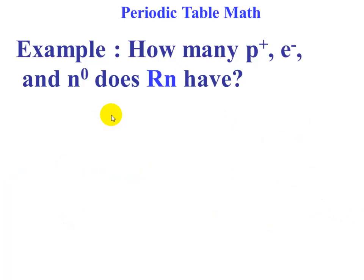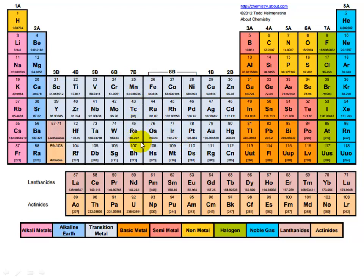We're going to try one more. I want you to pause the video and do this on your own. We find Rn—Rn stands for radon. We go to our periodic table, find radon in the bottom right corner, and we see that the mass is 222 and the atomic number is 86.